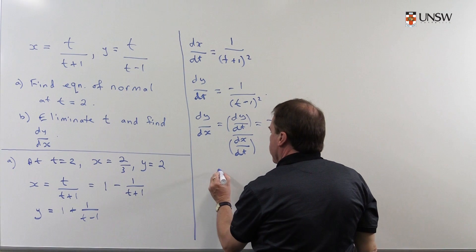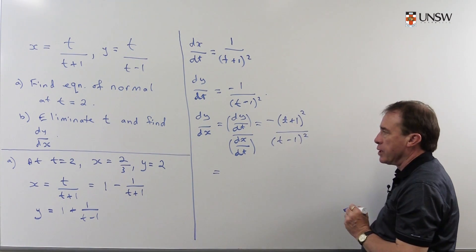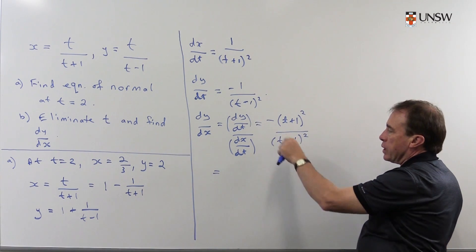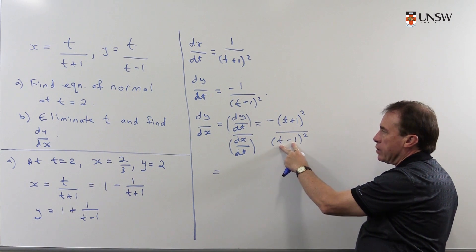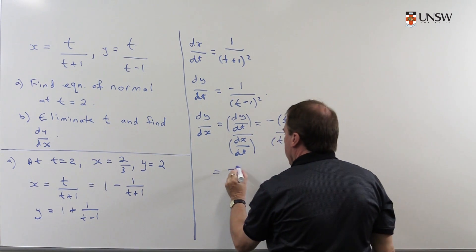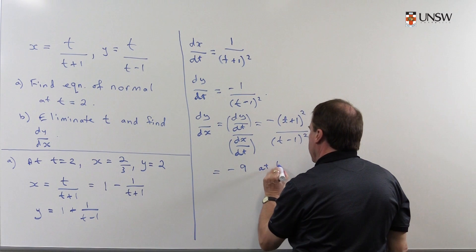Now we know the value of t so I can plug the value of t in now. So I put t equals 2 in. I get 1 in the denominator. This gives me minus 9 at t equals 2.